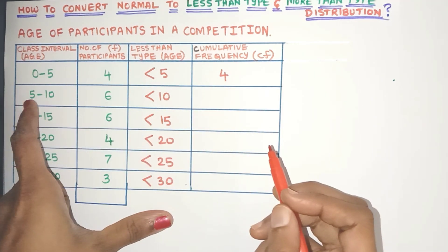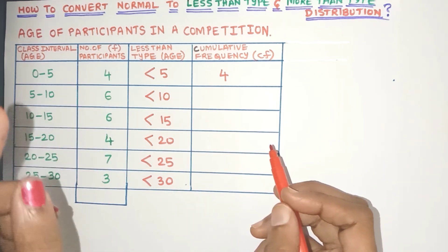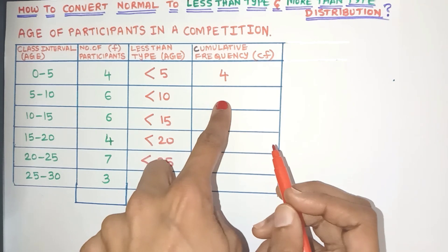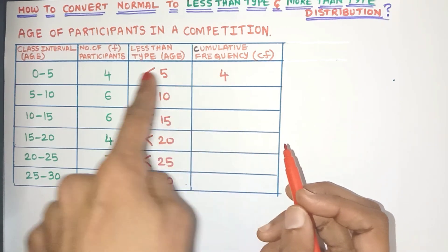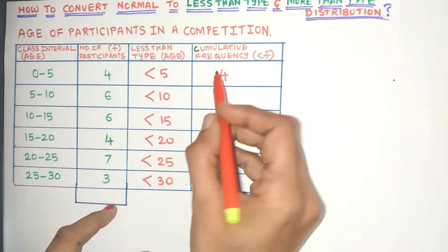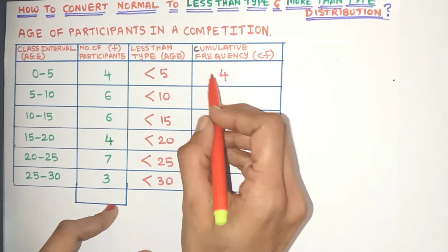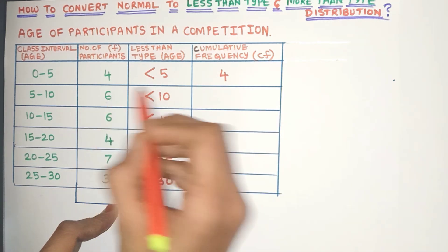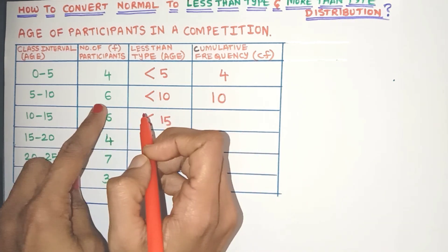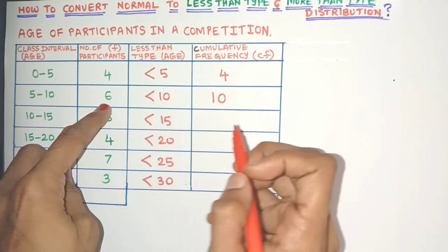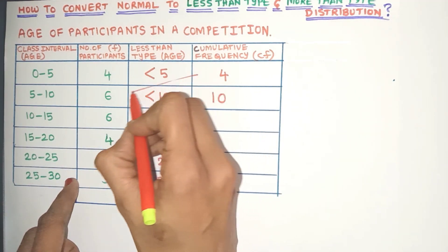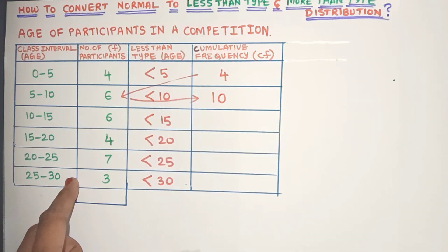Now in the second class interval 5 to 10, there are 6 participants, which means 6 participants have ages less than 10, so they will be included in this group. But what about those 4 participants with ages less than 5? They will automatically also have ages less than 10, so we need to add 4 to these 6 to get 10. Just remember that the current cumulative frequency is always equal to the current frequency value plus the previous CF value.